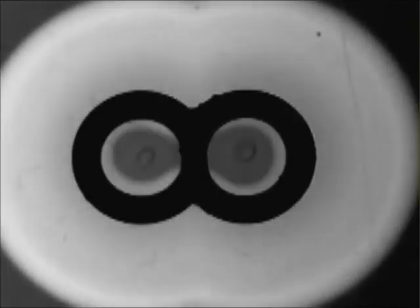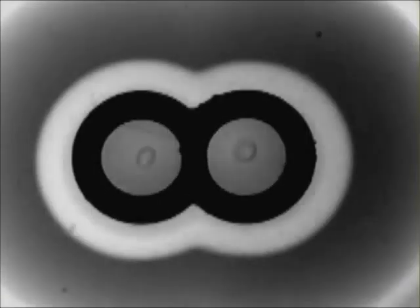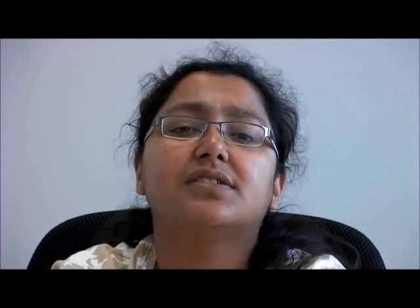This second movie shows that scroll ring rotation can also occur around both halves of the double torus. Notice here that the wave pattern looks completely different from the previous one.